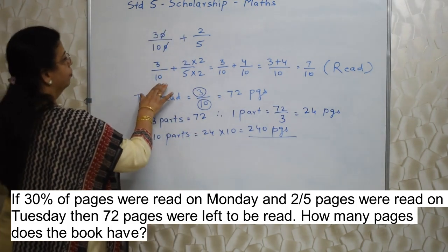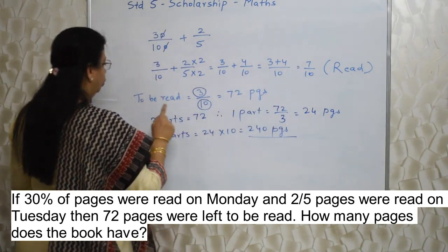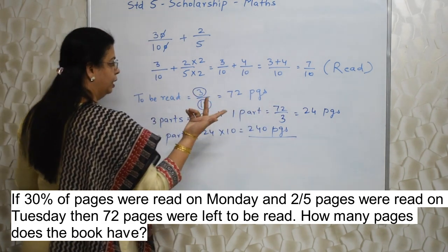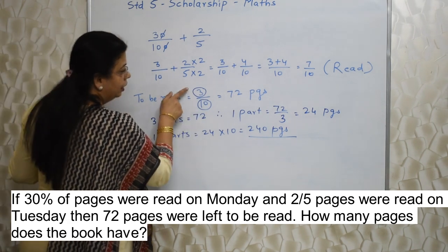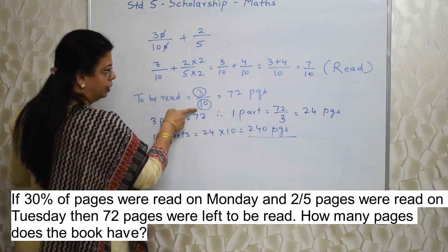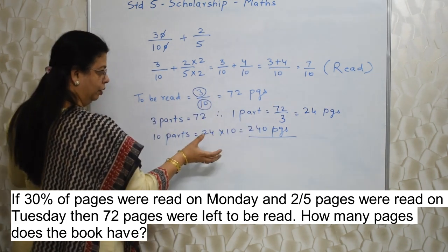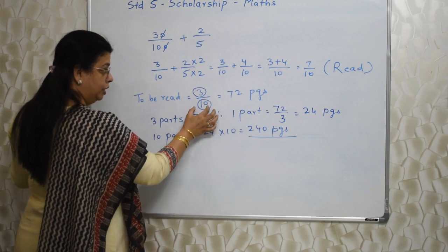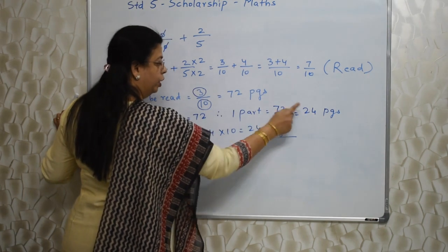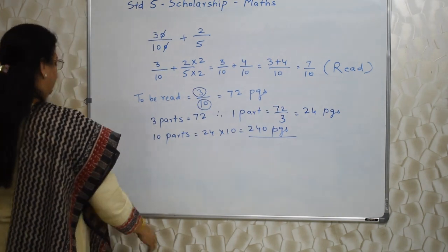To summarize: I added the fractions of pages read. 7 upon 10 has been read, so 3 upon 10 yet to be read equals 72 pages. The numerator 3 indicates parts out of 10 total. Using unitary method: 3 parts is 72, so 1 part is 24, and 10 parts is 240. The book has 240 pages.